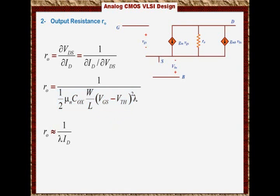So the output resistance is inversely proportional with Id. If you want to increase Ro, decrease Id or decrease lambda. You can decrease lambda by increasing the length of the transistor. So if you increase the length of the transistor and keep the current constant, you increase Ro.